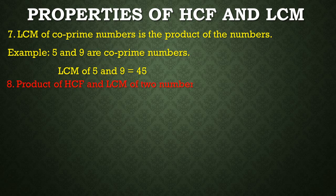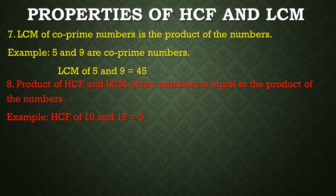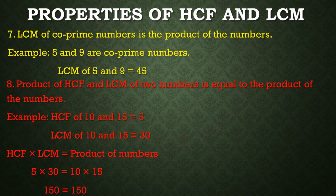Property number 8: Product of HCF and LCM of two numbers is equal to the product of the numbers. For example, HCF of 10 and 15 is equal to 5 and LCM of 10 and 15 is equal to 30. Product means multiplication. So 5 multiplied by 30 is equal to product of the numbers, which is 10 and 15. 5 times 30 is 150, and 10 times 15 is 150. So we can say that product of HCF and LCM of 2 numbers is equal to the product of the numbers.